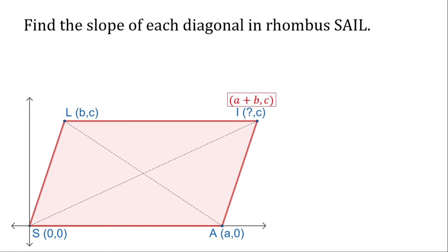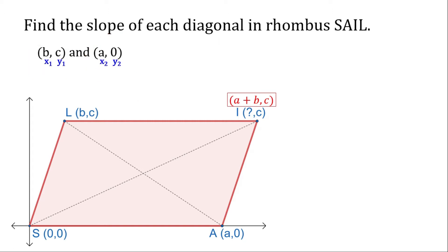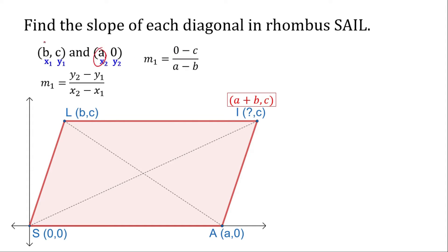Now let's solve the slope of line 1, from point B, C to point A, 0. So let's assign point 1 and point 2, that's x₁, y₁, x₂, y₂. Using the slope formula, we substitute our values: y₂ minus y₁ is 0 minus C, and x₂ minus x₁ is A minus B. Simplifying gives us the slope of line 1.